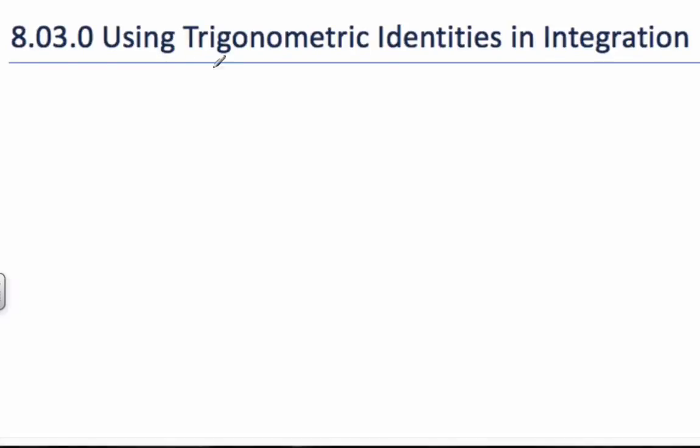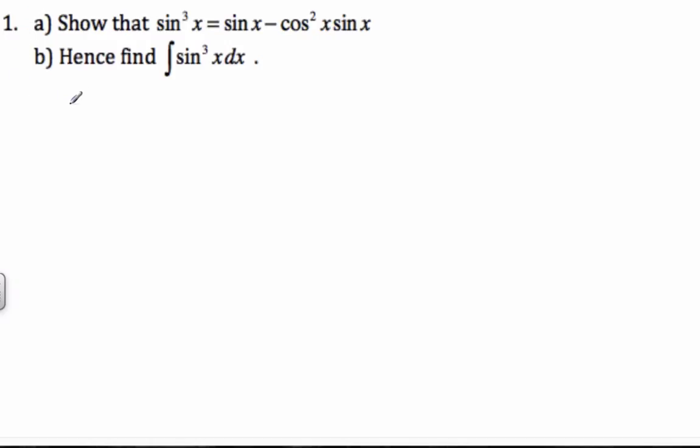All right, so today we are going to be using trigonometric identities to do some integration. Let's get right down to it and consider this first one. Show that sin³x equals sinx minus cos²x sinx.